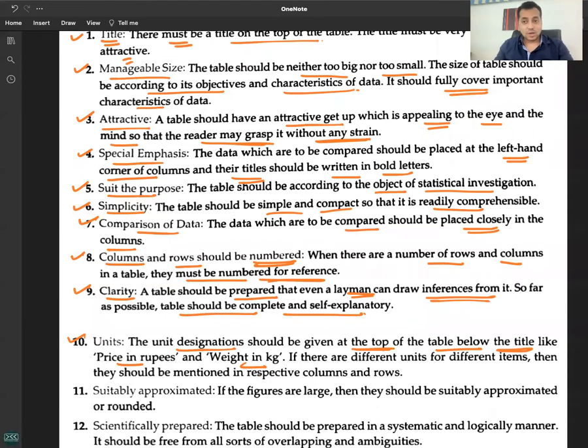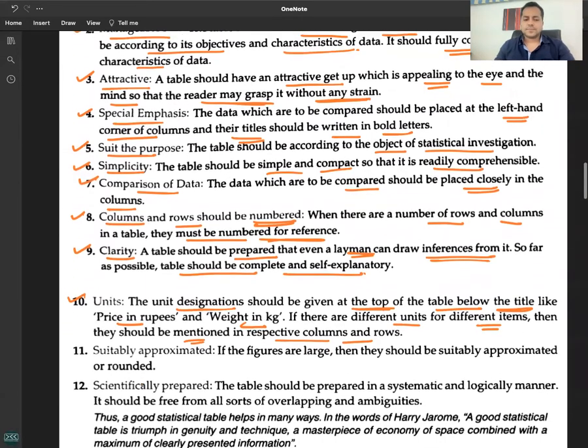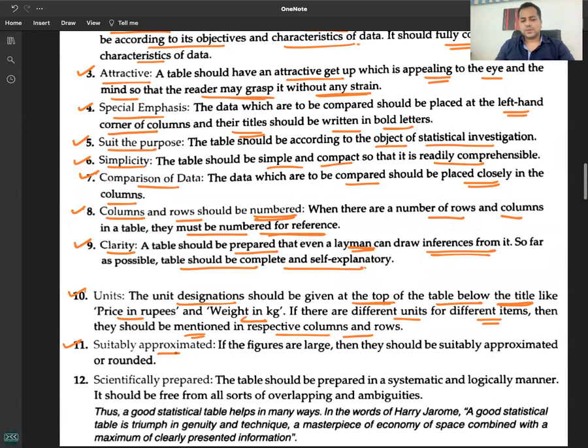If there are different units for different items, they should be mentioned in their respective columns and rows. Number eleven: Suitably approximated. If the figures are large, they should be suitably approximated or rounded.